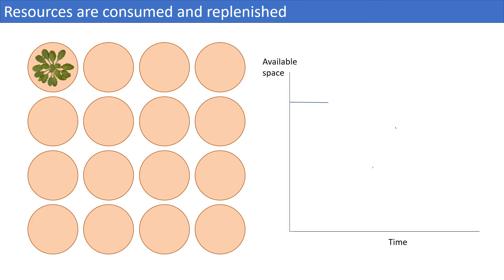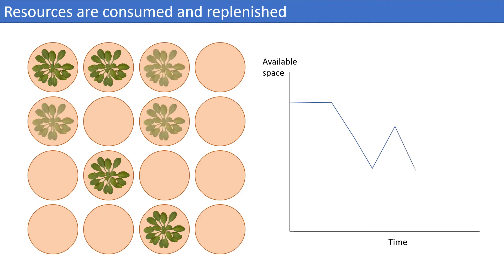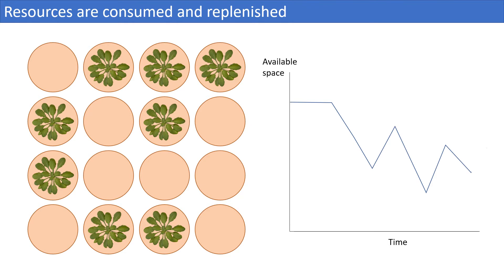So in a sparse population, there is a lot of space available for growth. As the patches become occupied, the resource availability decreases. However, plants are not growing indefinitely on a patch. At some point, they are bound to go locally extinct, either because of old age, an accident, or predation. When this happens, the patch is available again, so the resource is renewed.